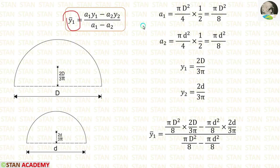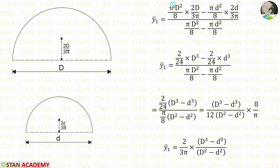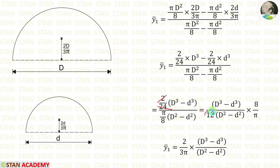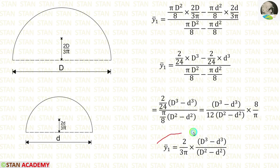In the y1 bar formula, we can apply the values of a1, a2, y1 and y2. We can eliminate pi terms, and combining D squared times D gives D cubed, 8 times 3 gives 24. Similarly small d squared times small d gives small d power 3. We take 2 by 24 and pi by 8 outside, canceling to get 1 by 12. Finally, y1 bar is equal to 2 by 3pi into caps D cubed minus small d cubed, by caps D squared minus small d squared.